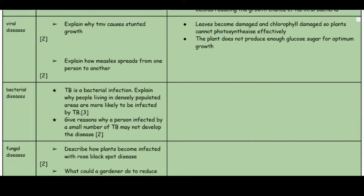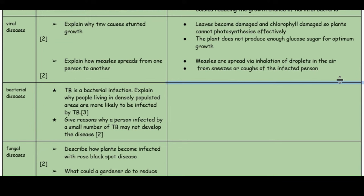The next question: explain how measles spreads from one person to another. Measles is spread via the inhalation of droplets in the air — specifically from sneezes or coughs of an infected person.